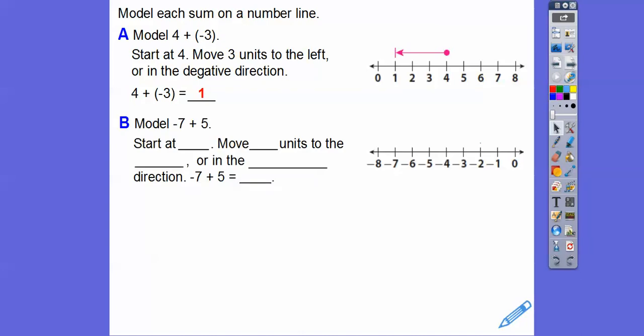Let's model this. Here we're going to start at negative 7, and then we're going to move 5 units in the positive direction — to the right. And that's going to take us to negative 2. So negative 7 plus 5 equals negative 2.